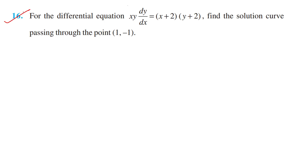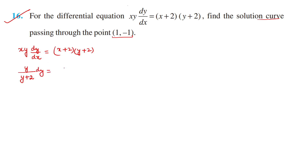Now question 16: For the differential equation xy dy/dx = (x+2)(y+2), find the solution curve passing through the point (1,−1). We separate variables by taking y terms to the left: y/(y+2) dy = (x+2)/x dx. Variables are separated. Now integrate both sides: ∫y/(y+2) dy = ∫(x+2)/x dx.